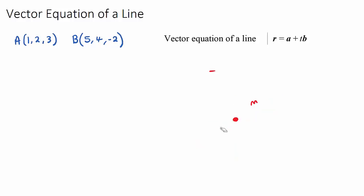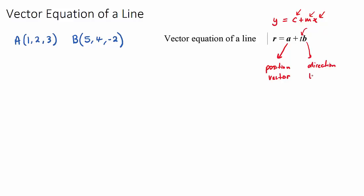It's actually very similar to the vector equation of a line. The general formula, which is given in our formula booklet, is r = a + tb. This is very similar to y = c + mx. Notice that c was some point the line passed through, and a is going to be a position vector that our line passes through. And x was a variable, which is the same as t, while b is the direction vector — equivalent to the gradient. So there are a lot of similarities; it's the equation of a line just in vector format.